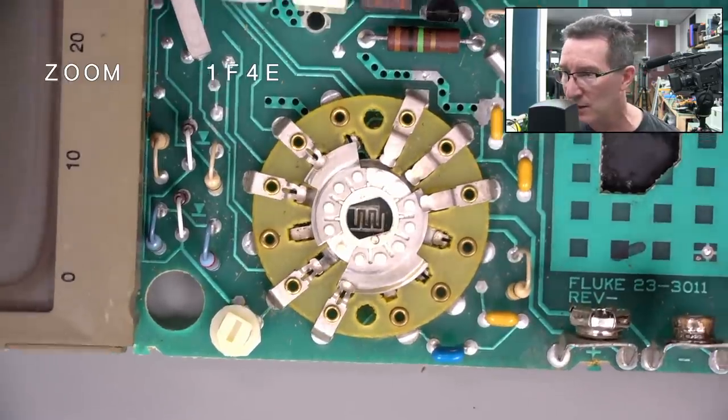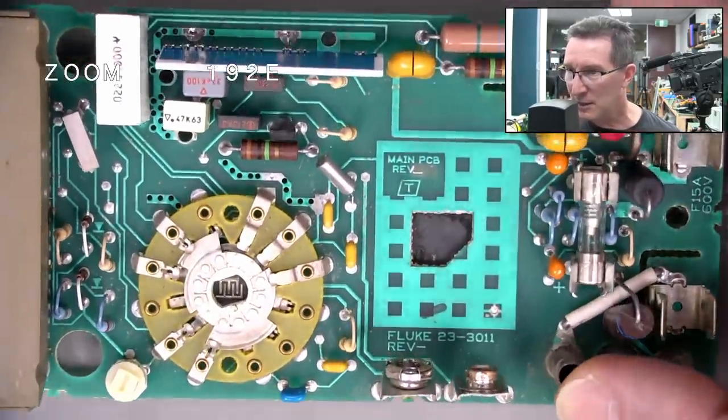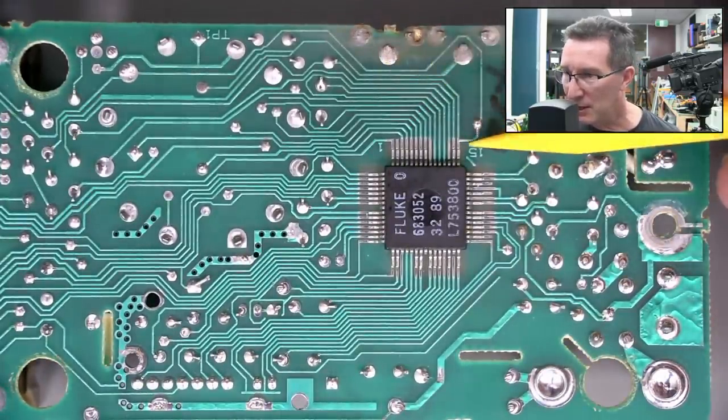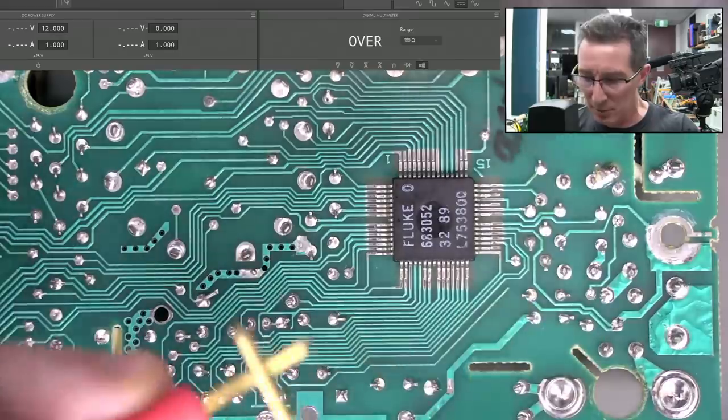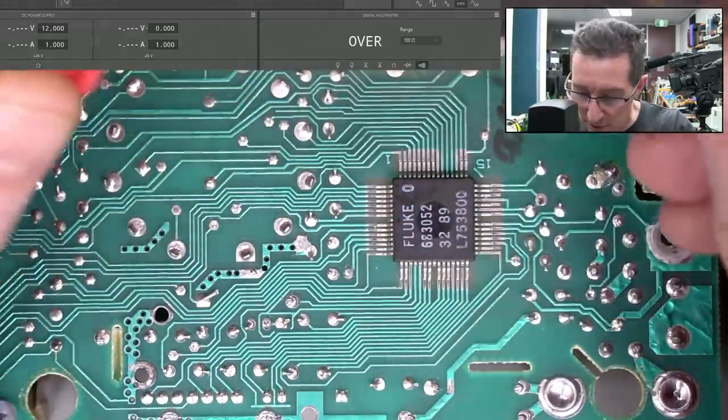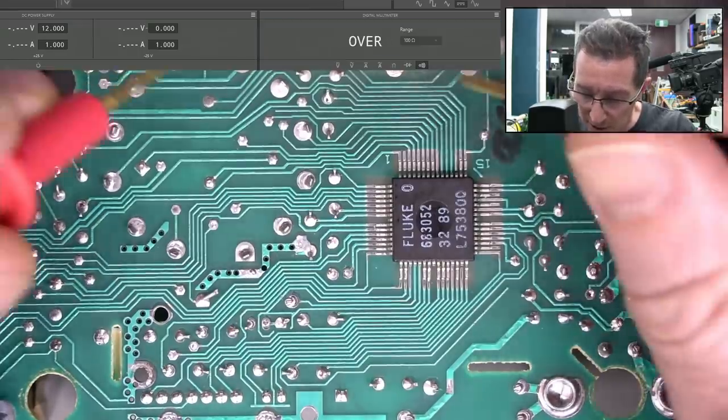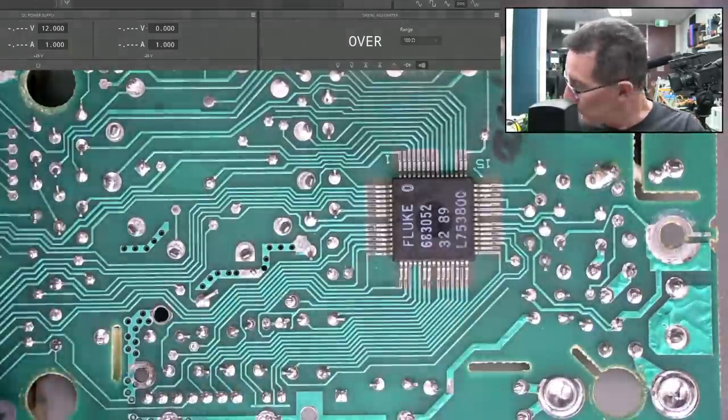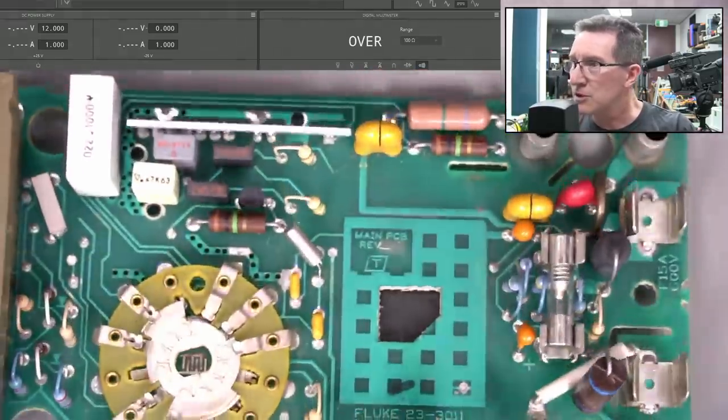This all looks in really good nick. The range switch is one of the things that you want to suspect in an old meter like this. There doesn't seem to be any visual damage at all there. I did want to measure that trace. But once I cleaned it up, it does actually look in good nick. Let's, we're in buzzer mode. That track hasn't been eaten away. It's all good after a visual. We are going to go to the schematic.